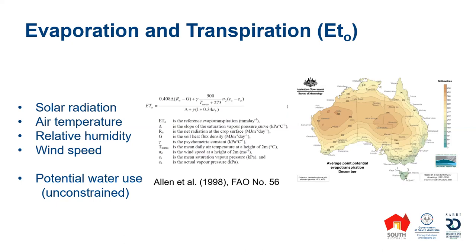We're able to measure, model, and forecast evapotranspiration. Over on the right is a map put together by the Bureau of Meteorology looking at the potential evapotranspiration across Australia for December — that's the amount of water that would be used by plants across the continent. I'll talk in a little more detail about how that's done.